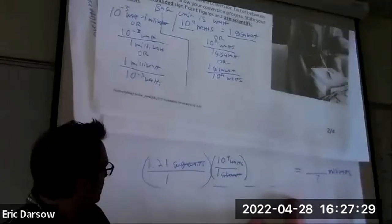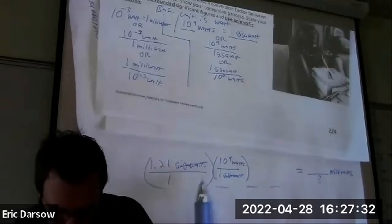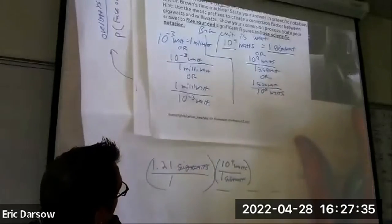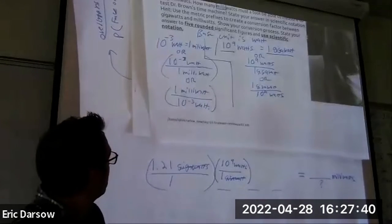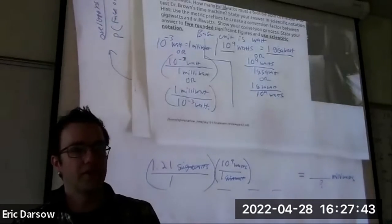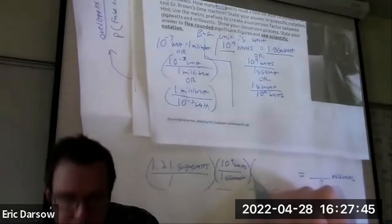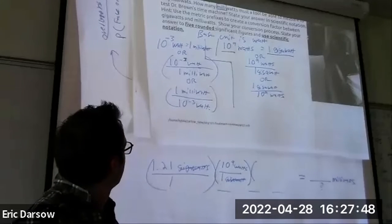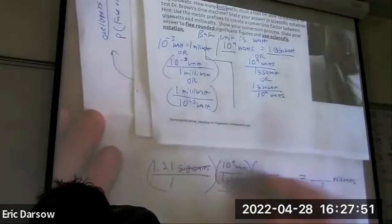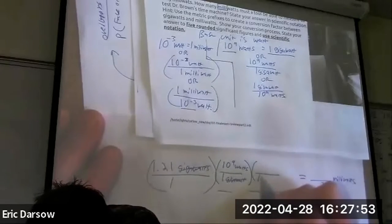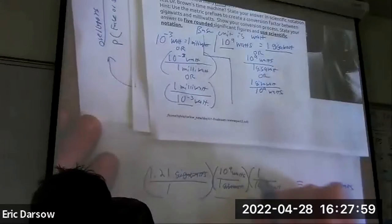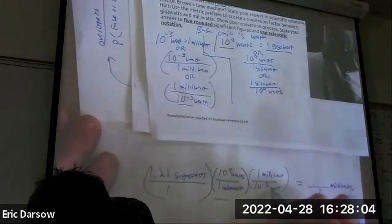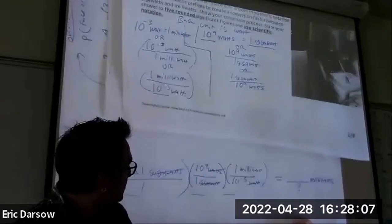One gigawatt is the same as 10 to the ninth watts. Don't forget to show you're canceling. The gigawatts cancel. If my answer was in watts I would be happy but I got to do one more hop. Who's going to help us out? The one on the bottom - watts is on the bottom. So 10 to the negative third watt is the same as one milliwatt.